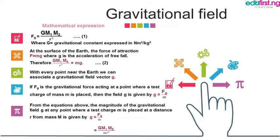With every point near the earth, we can associate a gravitational field vector g. Because this gravitational force is a vector, it has direction. If F is the gravitational force acting at a point where a test mass M is placed, then the gravitational field g is given by F over M.